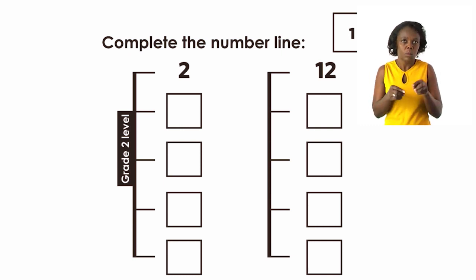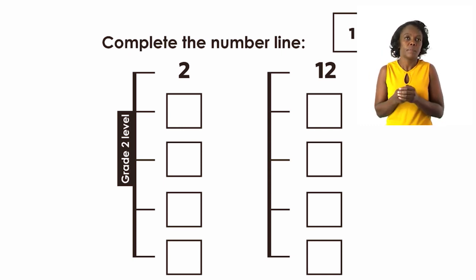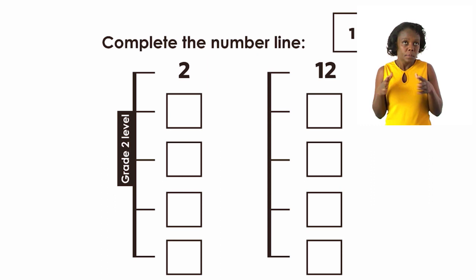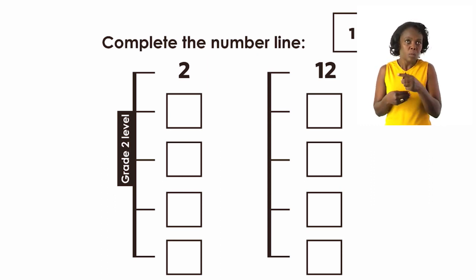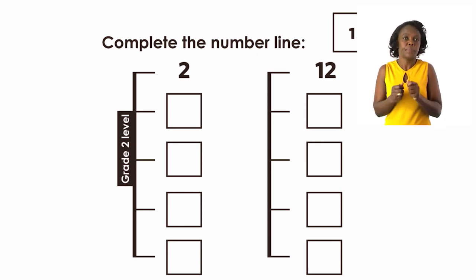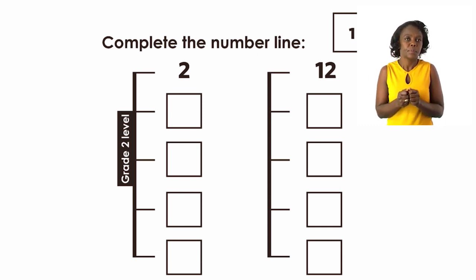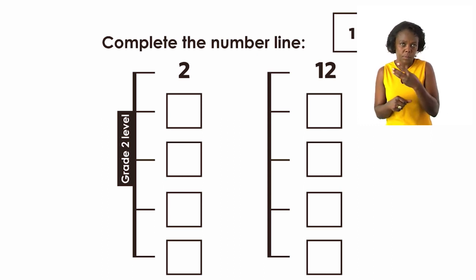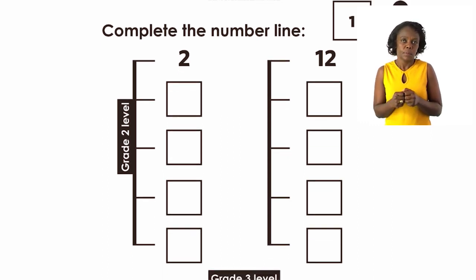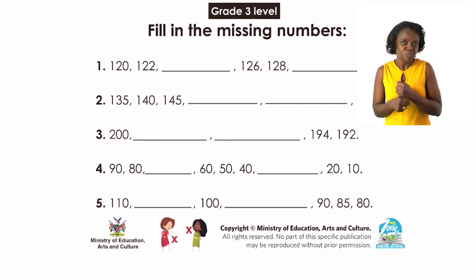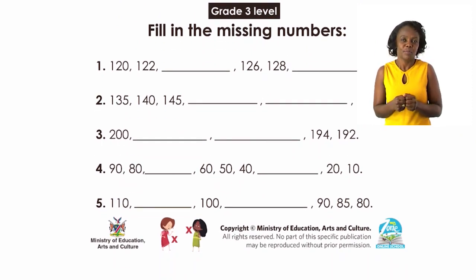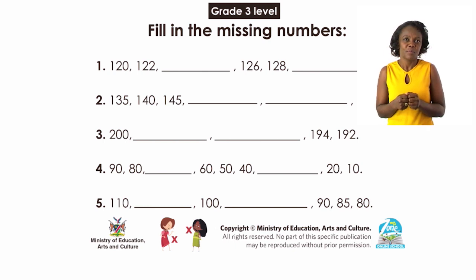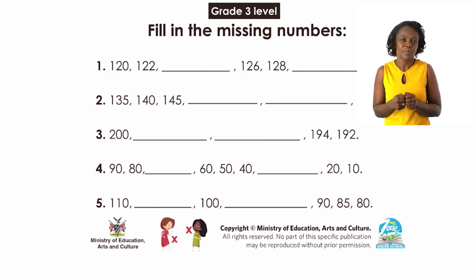Continue with the second number line — they have started on 12. We are counting in 2, so continue skipping one number and find out the numbers that are missing in the boxes. Then we are going to continue with the grade 3s. Their exercise is a bit challenging, but we have learned how to count from 100 up to 200, therefore this will not be a big challenge. I know you can do it.